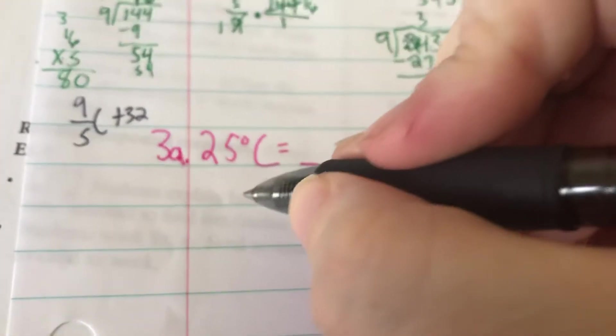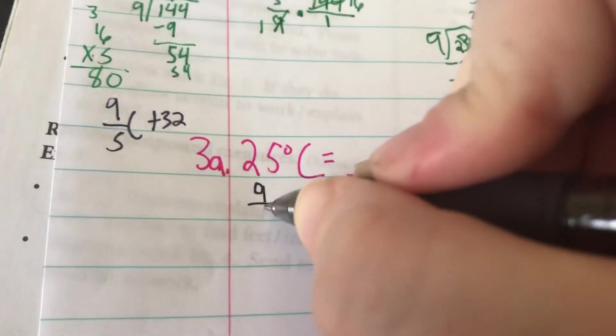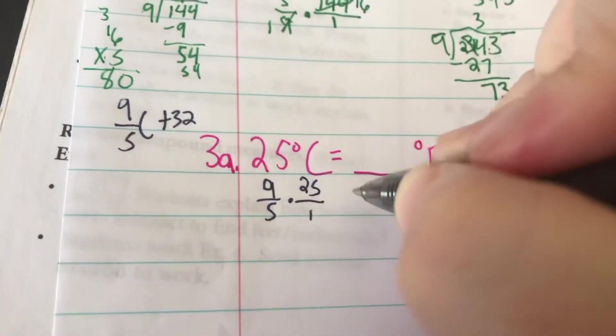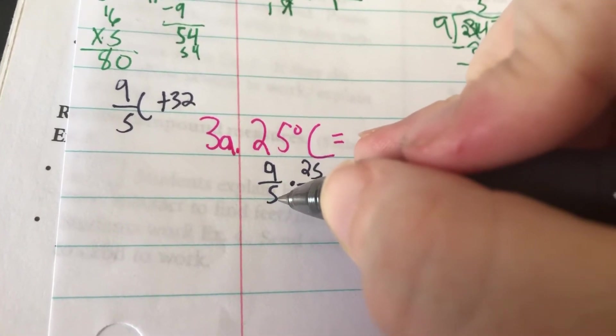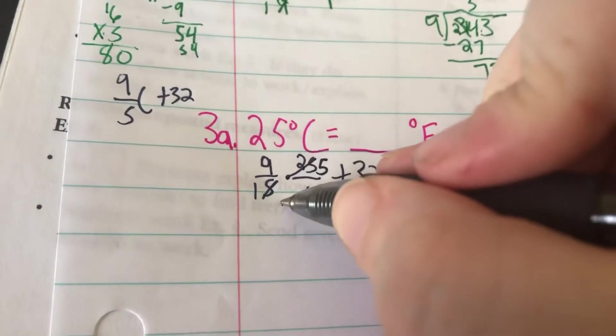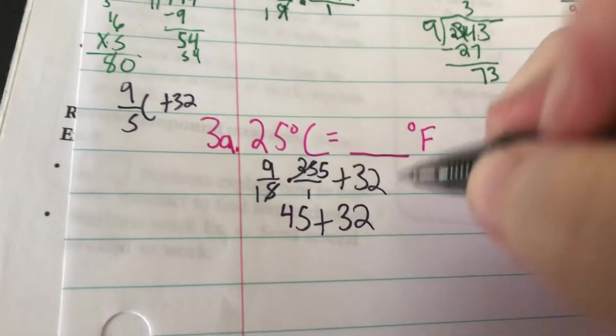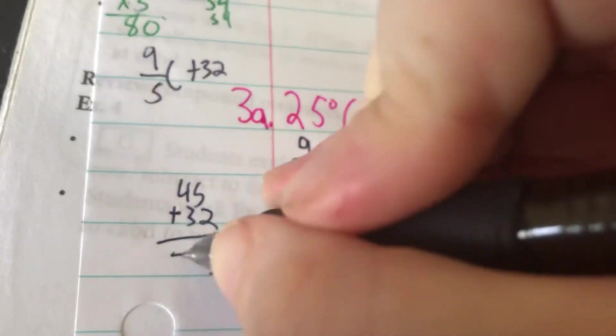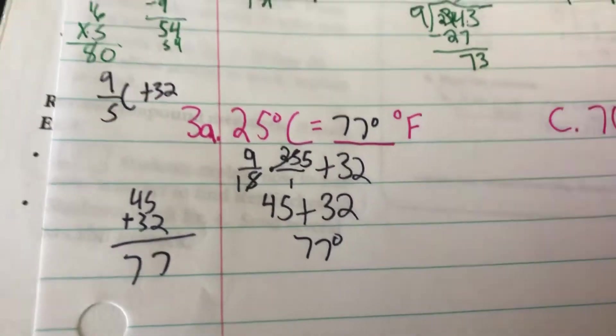So 9/5 times 25 plus 32. 9/5 times 25 over 1. We look at the denominator. 5 goes into 25 five times, once into 5. So 45 over 1 plus 32, which equals 77 degrees Fahrenheit.